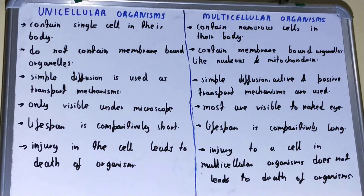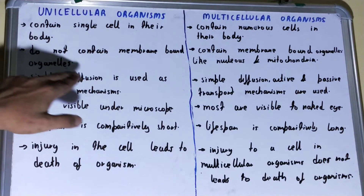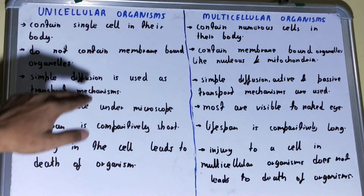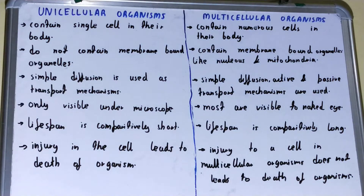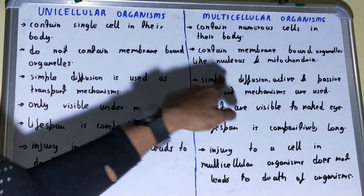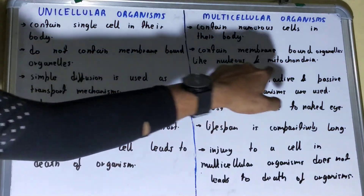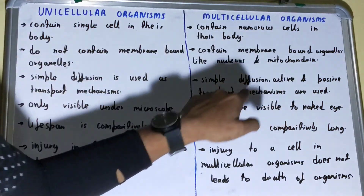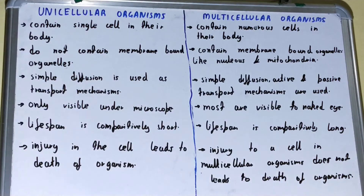Next, if we talk about the unicellular organisms, they use only simple diffusion for their transport mechanism. But if we talk about the multicellular organisms, they use simple diffusion as well as active and passive transport mechanisms.